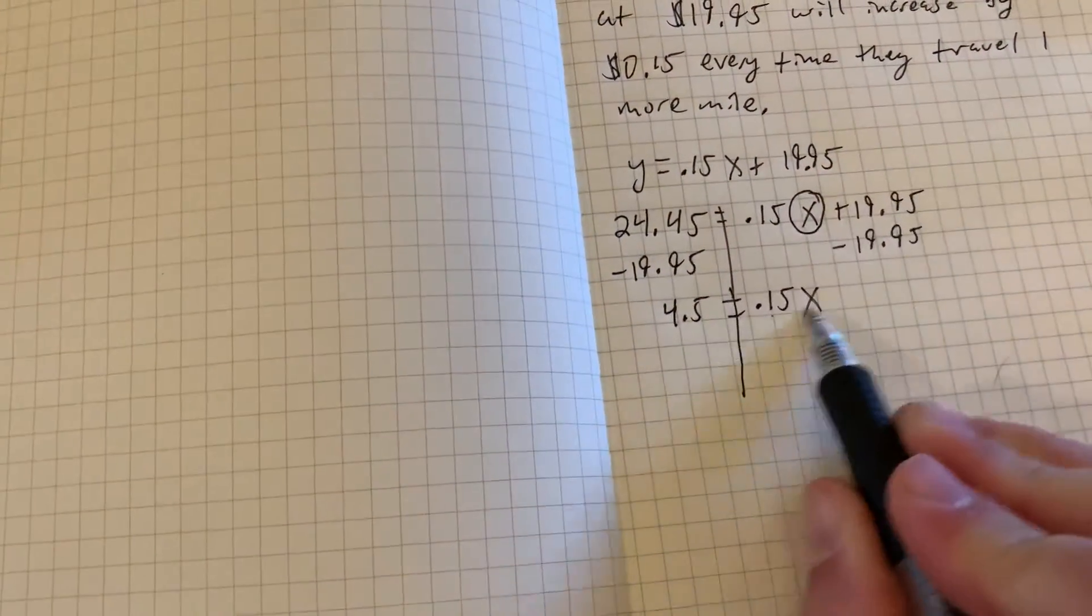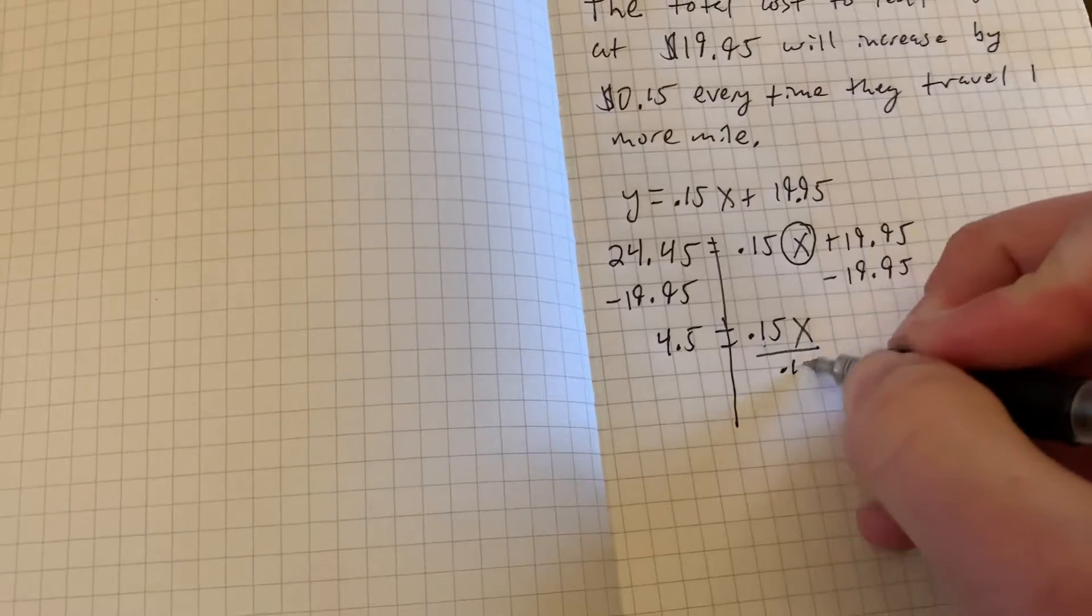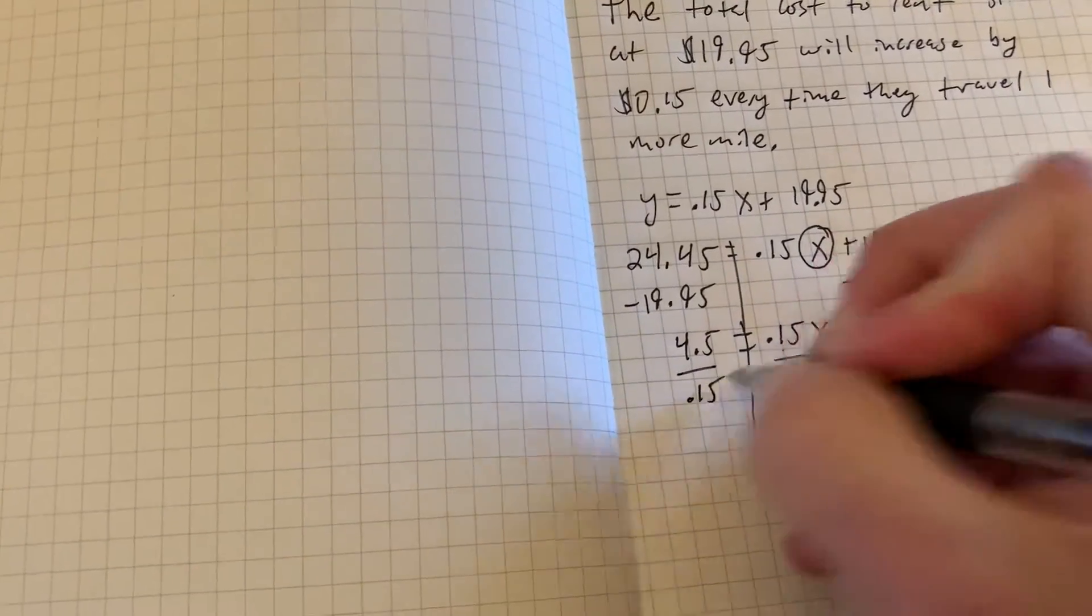$4.5. And to get rid of that close attached number at the end, that is multiplication. So the opposite is dividing both sides by 0.15.